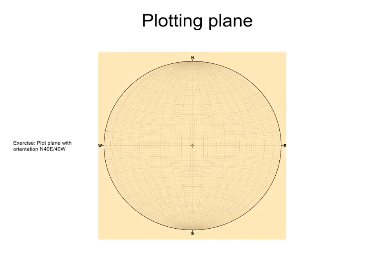Now let's look at how to plot a plane. Let's plot the plane with strike and dip north 40 east, 40 west. First, we mark the strike of the plane on the primitive of the stereonet, in this case north 40 east.